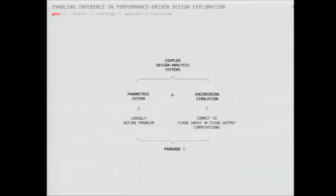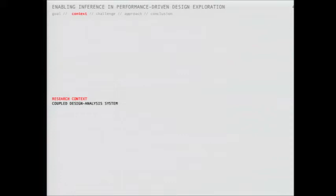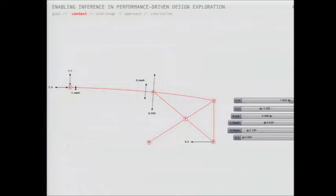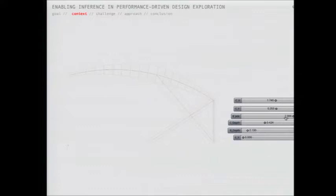To do so, I'll first briefly explain how we would typically set up and utilize a coupled design analysis system, making use of a case study - a well-known building by Pierluigi Nervi. We would typically set up a parametric design system by selecting design variables that best characterize the initial design intentions and select ranges to define the bounds of the design space. For simplicity, I'm using a frame model here, discretizing the cross-section along the frame to emulate the varying depth of his original structure.